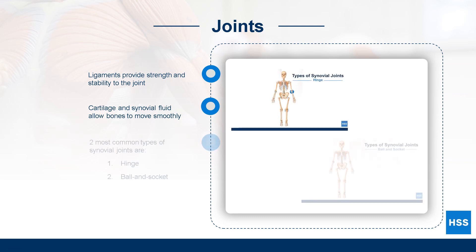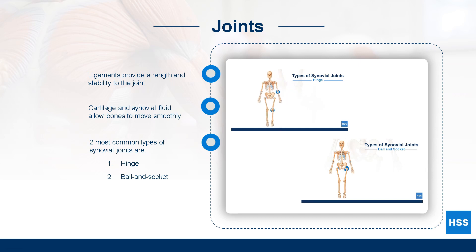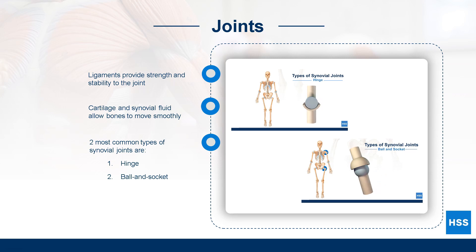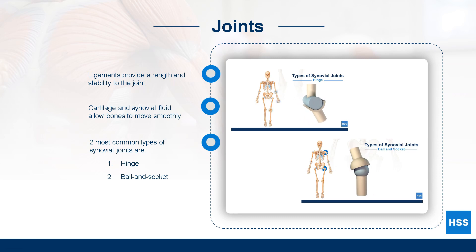Synovial joints play an important role in sports and physical activity because they allow for large amounts of movement. The two most common types of synovial joints are hinge and ball and socket. Hinge joints are found at the elbows, knees, and fingers. We use hinge joints during activities like kicking a soccer ball or throwing a dart. The hip and shoulder are examples of ball and socket joints that allow us to swim, throw, run, and jump.